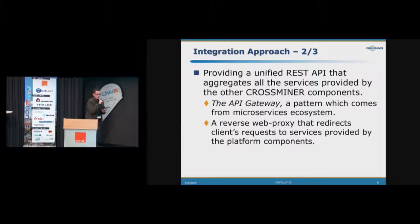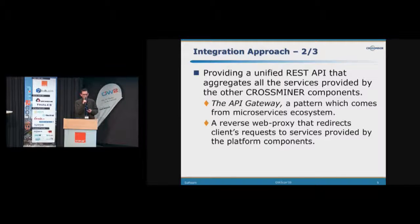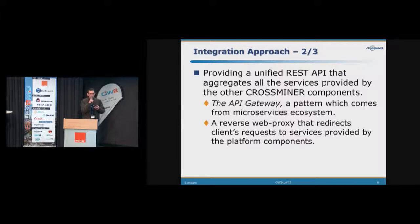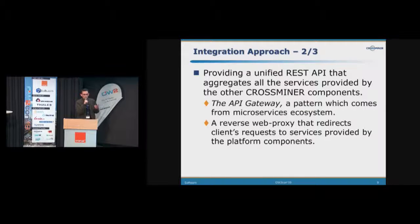The second step is to provide a unified layer to aggregate all the services provided by the backend micro-components. Here we aimed to use an API gateway, which is a pattern from the microservice ecosystem. It serves the functionality of a reverse proxy to redirect the different client requests to the corresponding platform components.